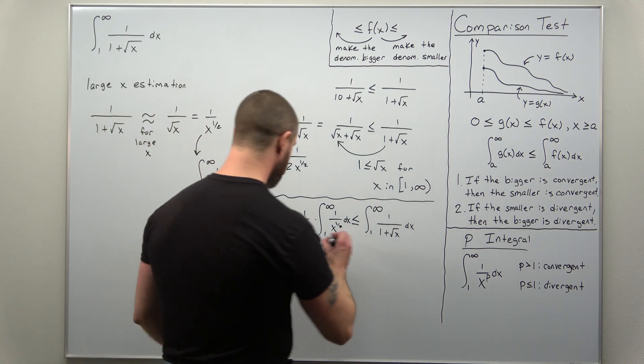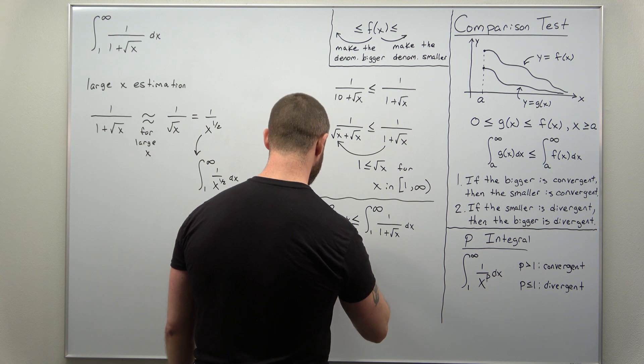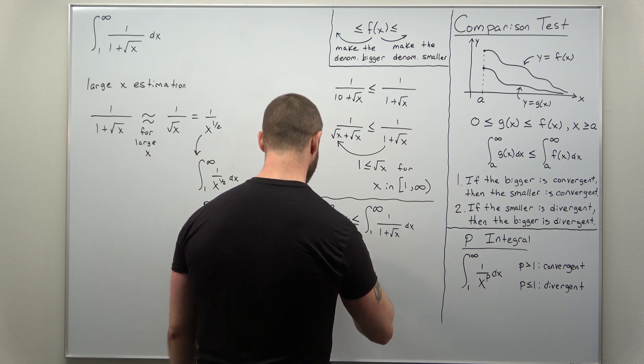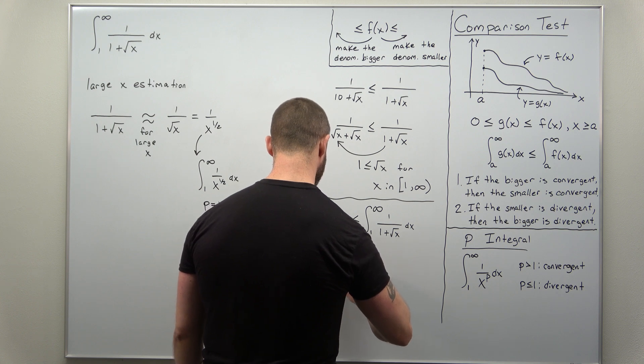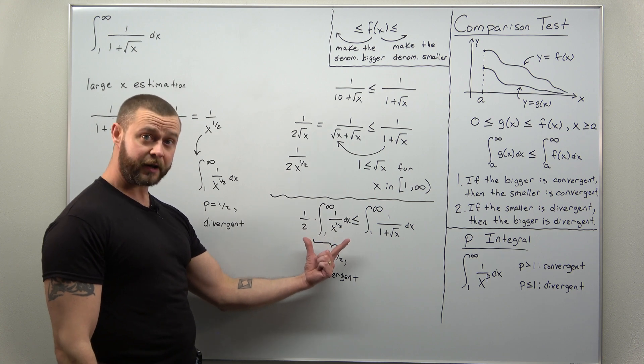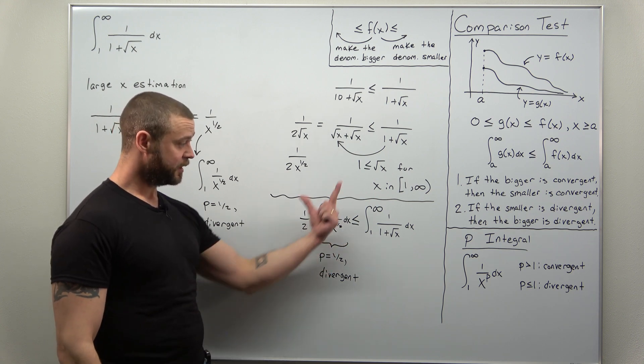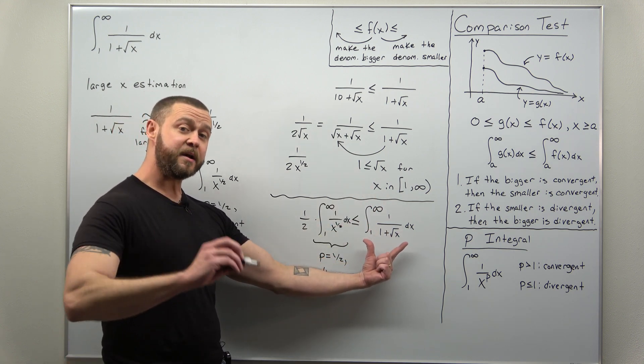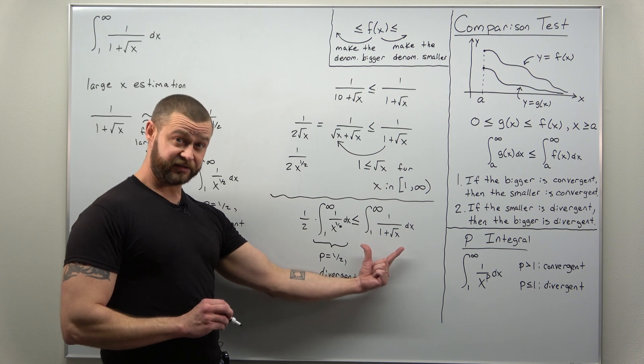And this completes it because now this is a divergent P integral. P is one half. And by the comparison test, if the smaller improper integral is divergent, that implies that the bigger improper integral is divergent.